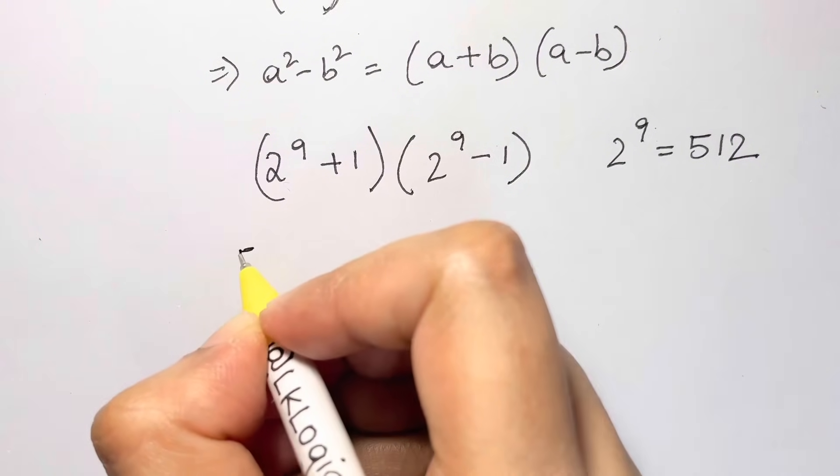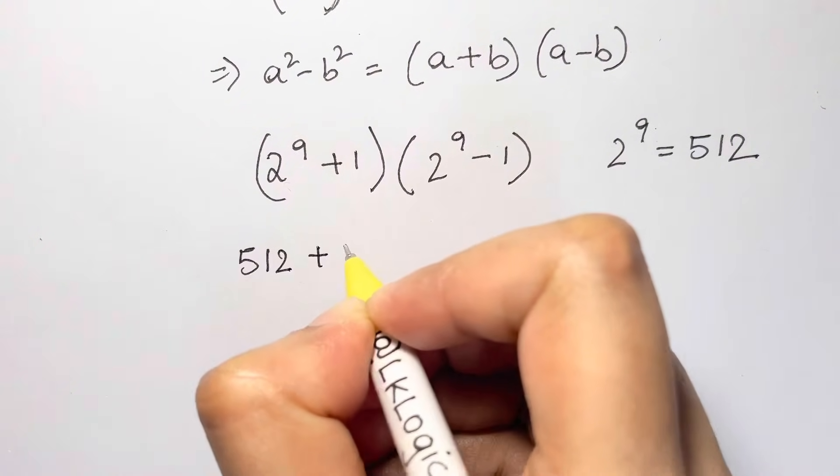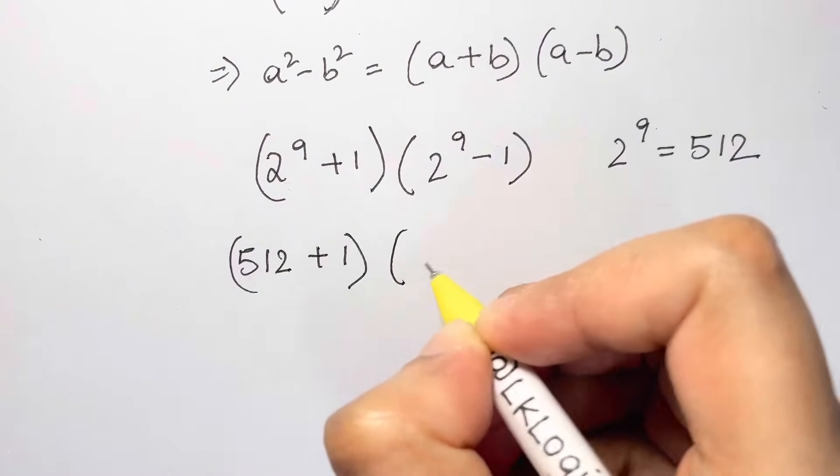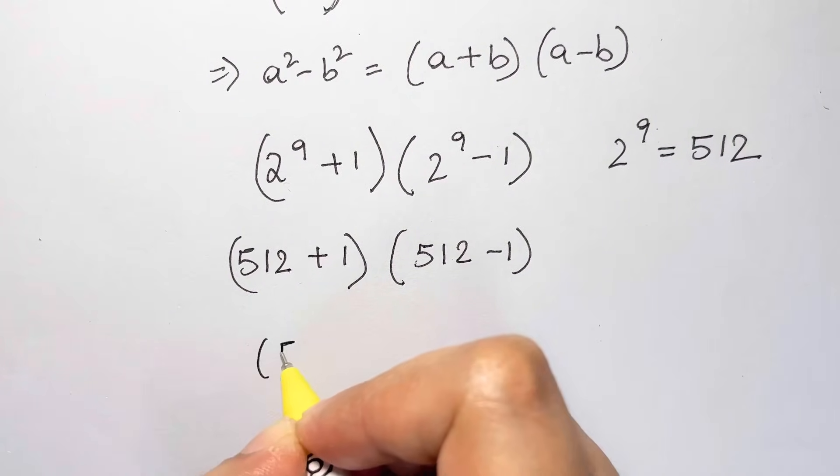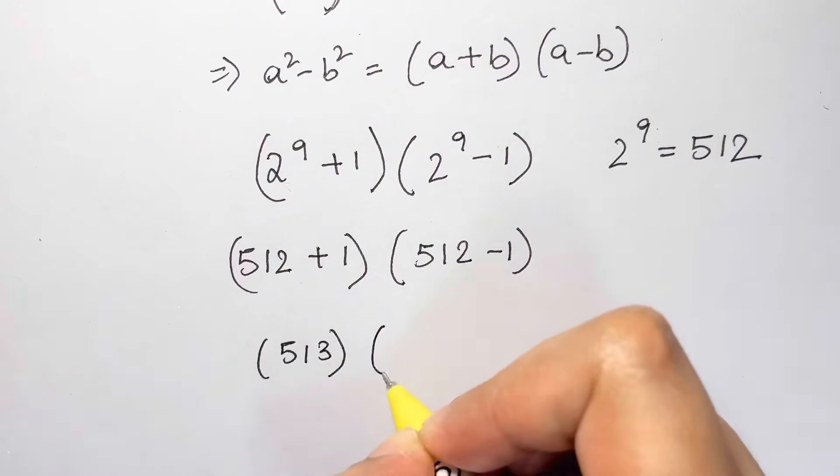So we are going to substitute that. 512 plus 1 times 512 minus 1. So 512 plus 1 is 513 and 512 minus 1 is 511.